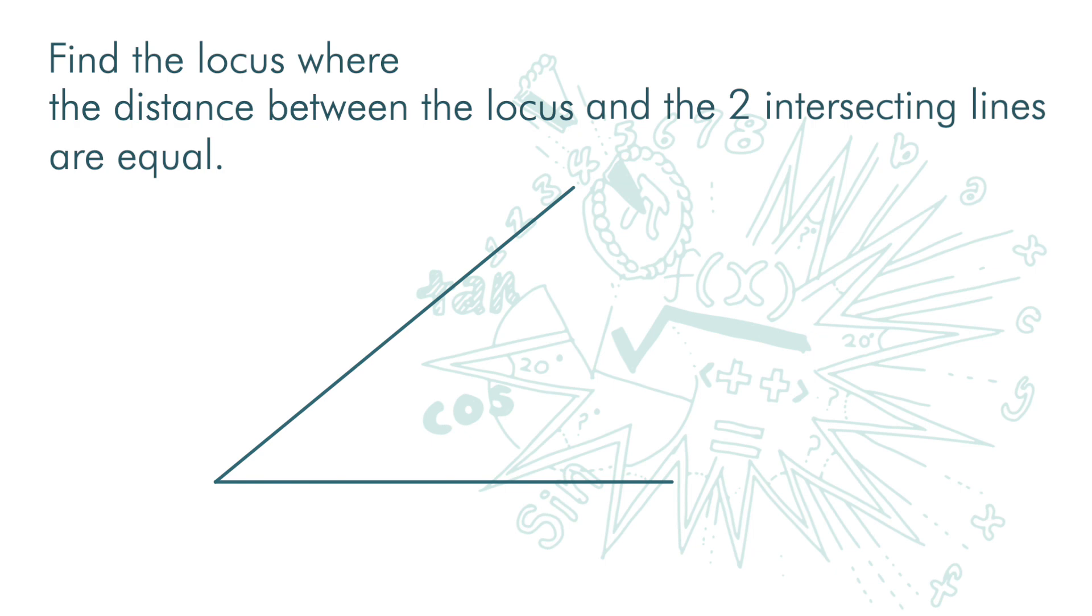First, we get a point where the distance of the point to the line and the distance of this point to this line are equal. Then, we get the second point where the distance of the point to this line and the distance of this point to this line are equal.